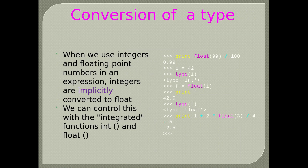Conversion of a type: when we use integers and floating point numbers in an expression, integers are implicitly converted to float. We can control this with the int() and float() functions. print(float(99) / 100) results in 0.99. i = 42: type(i) says integer. f = float(i): print(f) gives 42.0, type(f) gives float. print(1 + 2 * float(3) / 4 - 5) gives negative 2.5.